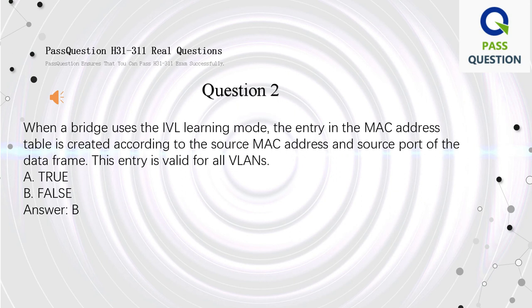Question 2. When a bridge uses the IVL learning mode, the entry in the MAC address table is created according to the source MAC address and source port of the data frame. This entry is valid for all VLANs.